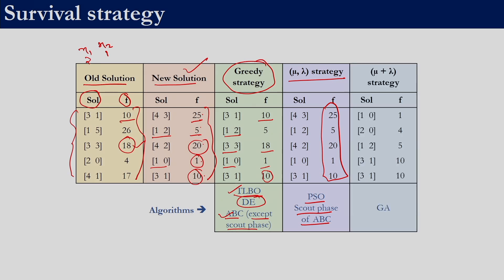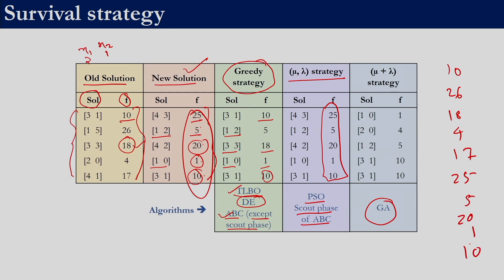Then we had the mu plus lambda strategy, which we used only in GA. Here we had 5 old solutions and generated 5 new solutions — out of these 10 solutions we selected the 5 best solutions. So we selected fitness values 1, 4, 5, 10, 10. These are the three strategies seen in different algorithms. In ABC one phase used greedy strategy, while the scout bee phase used the mu comma lambda strategy. When designing an algorithm you can choose any one of these strategies, a combination of them, or even come up with your own strategies.